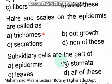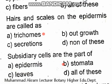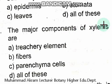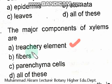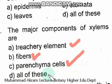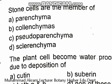Subsidiary cells are part of parenchyma cells. The major components of xylem are tracheary elements, fibers, and parenchyma cells — the right option is option D, all of these. Stony cells are members of sclereids.